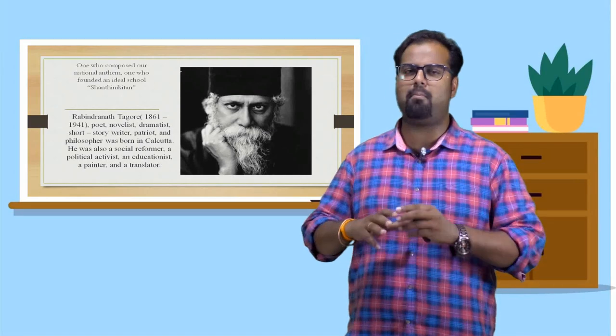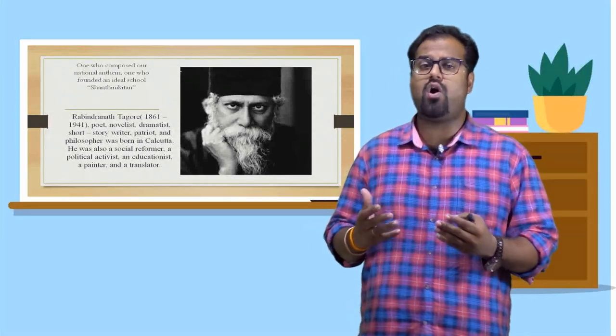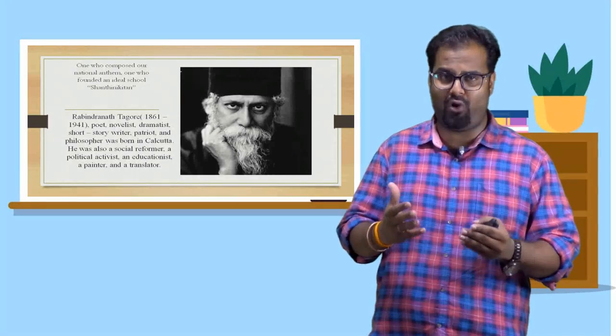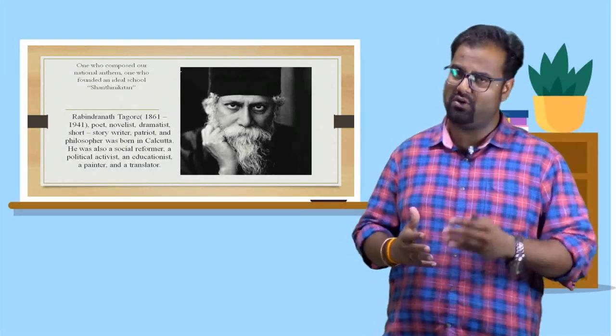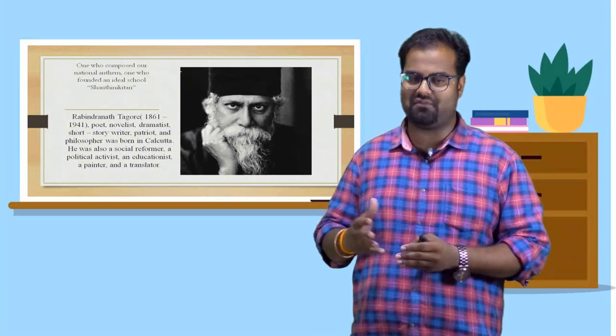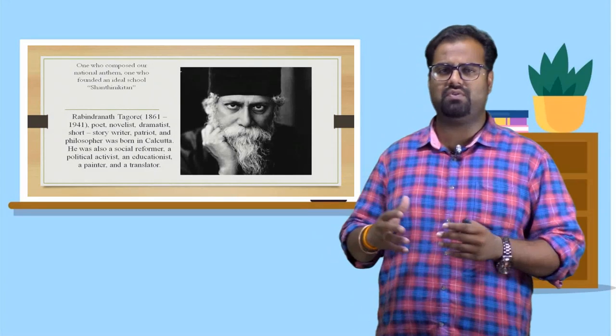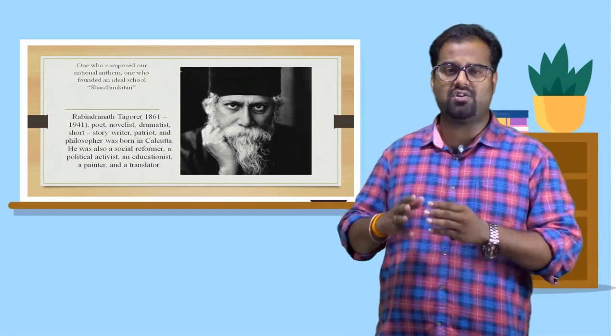He was born in 1861 and he was a multifaceted personality. He was not just a one person to be observed as, but he had a lot of talents and that is the reason we all have huge respect. And he is a person to be followed and he is a great inspiration to all of us. Let us look at his personal details. He was born in 1861 and he was a great poet, novelist, dramatist, short story writer, patriot, and philosopher. He was born in Kolkata. Basically, Kolkata means today's West Bengal.